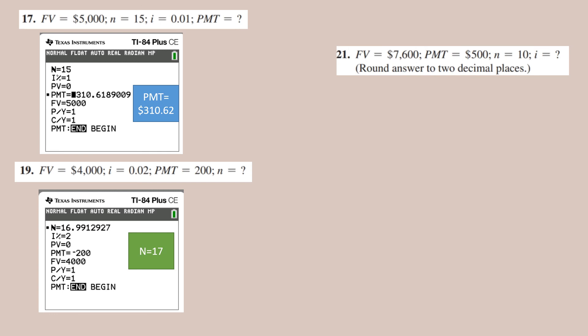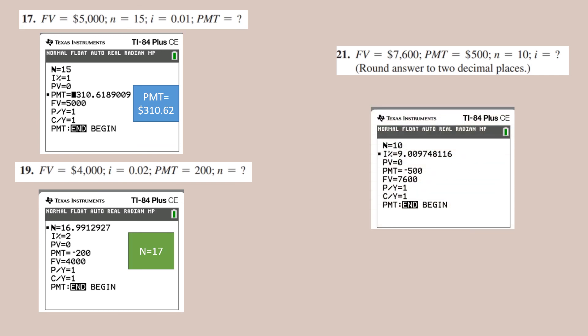If the future value, payment, and period n are given, and if I am trying to find the i interest rate, then entering this in the calculator, it is easy to get the value for i, which is 9% or 0.09.